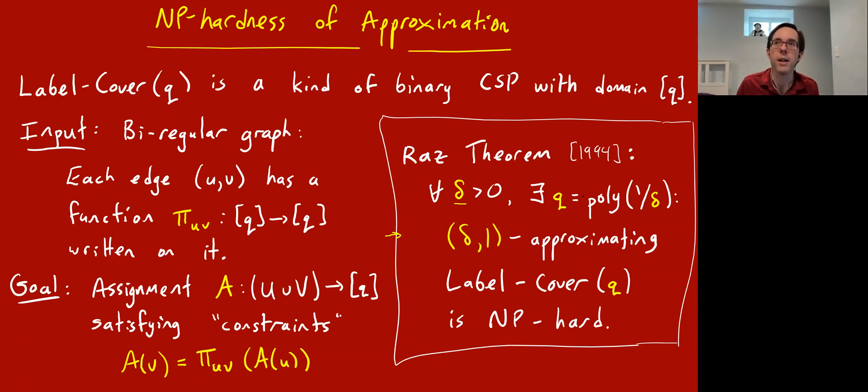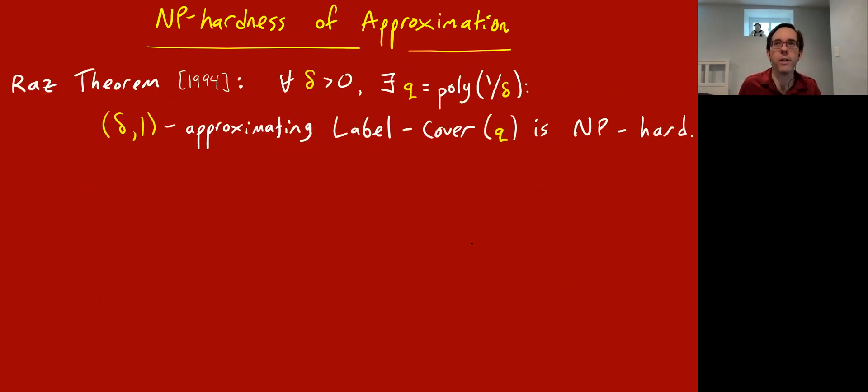Here's Raz's theorem from 1994 about the hardness of label cover. It's like a proven theorem, conditioned on P does not equal NP. For every small number δ, there's a sufficiently large q, which is polynomial in 1/δ, such that this label cover problem is not only hard to solve exactly, it's even hard to remotely optimally solve. This (δ,1)-approximate notation means I give you a label cover instance with domain size q, and even promise you that there's a perfect assignment that satisfies 100% of the constraints. It's NP-hard for an algorithm to find a solution that satisfies a δ fraction of the constraints. You can set δ to 0.1%, and any algorithm that can find an assignment satisfying 0.1% of the constraints in a perfectly satisfiable label cover instance can be used to solve SAT in polynomial time.